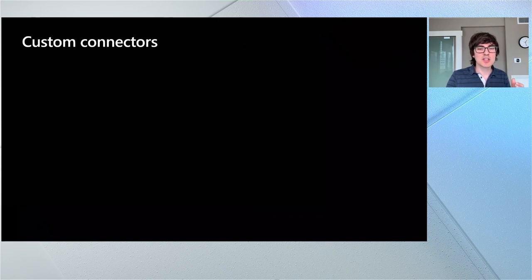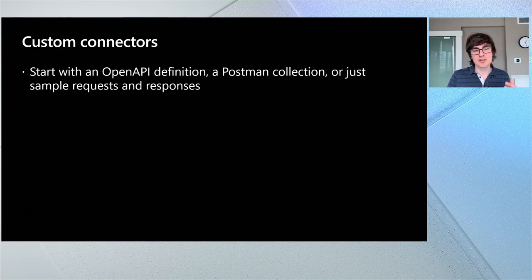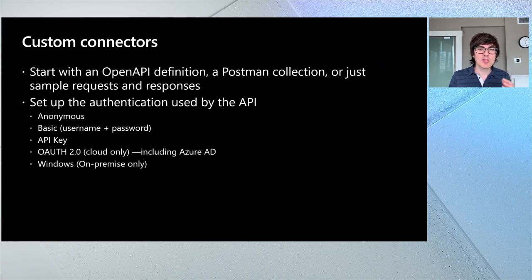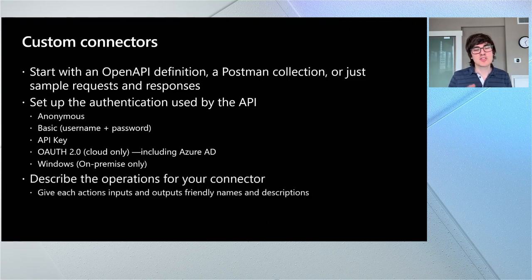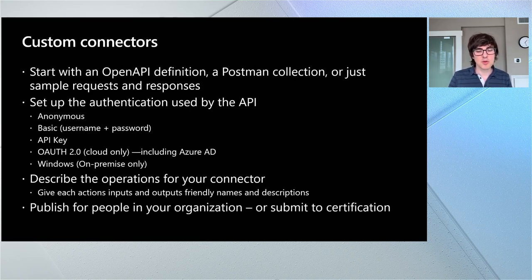All of these are ways you can have custom connectors, seamlessly going from the pro-development experience in Azure to the low-code experience inside of Power Automate. Custom connectors are really just descriptions of how your API works, based on open standards like OpenAPI. Just describe how the authentication works, describe the operations of your connector, give those things friendly names, then test it out and deploy it. You can even submit it to certification so everyone in the world can use that service if you want.